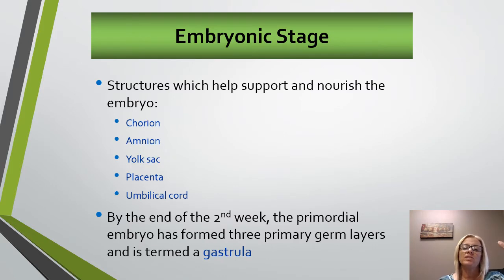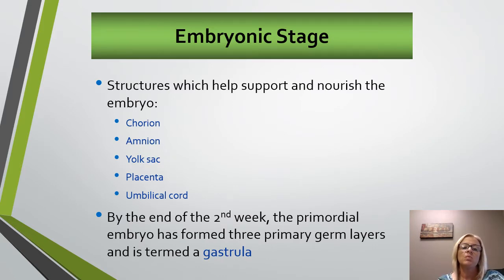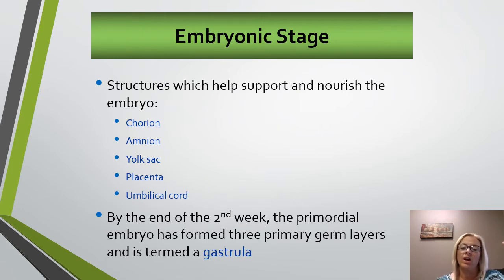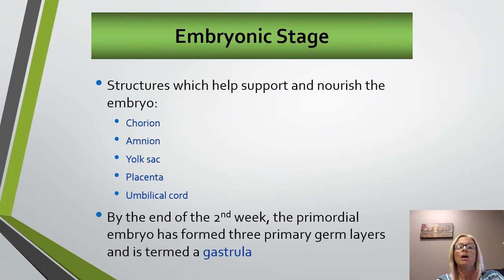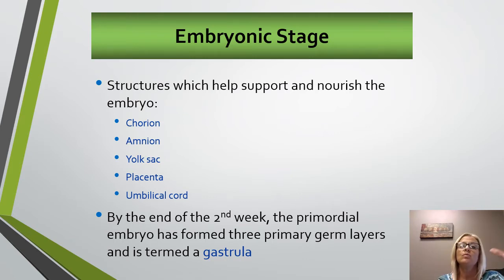The embryo needs a source of nourishment and support, so we have several structures that do that: the umbilical cord, the chorion, the amnion, yolk sac, and placenta. We have chorionic villi that extend out from the trophoblast into the endometrium in order to assist in this.